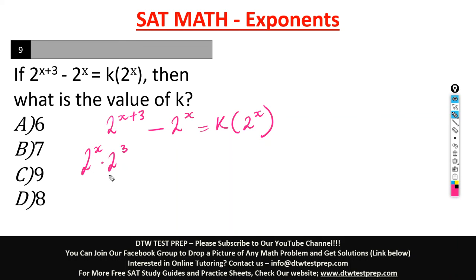We are going backwards now to the laws of exponents. So this is this, then minus 2 raised to the power of x equal to k in parentheses 2 raised to the power of x. From here, we can factor out 2 raised to the power of x because it's here, it's here. So I'm going to factor it out.